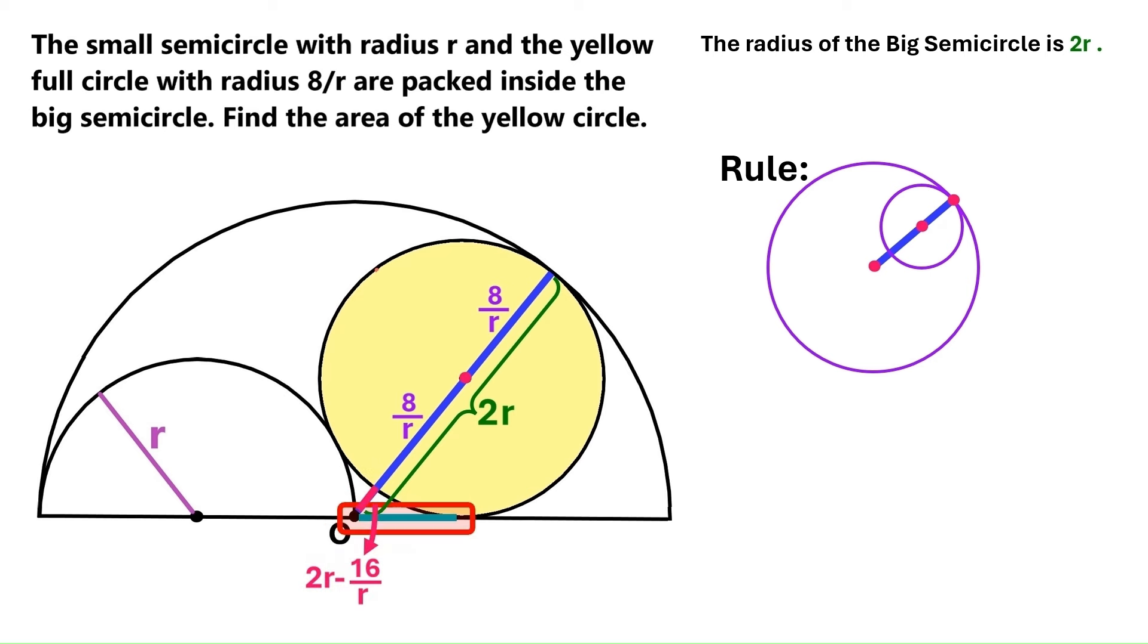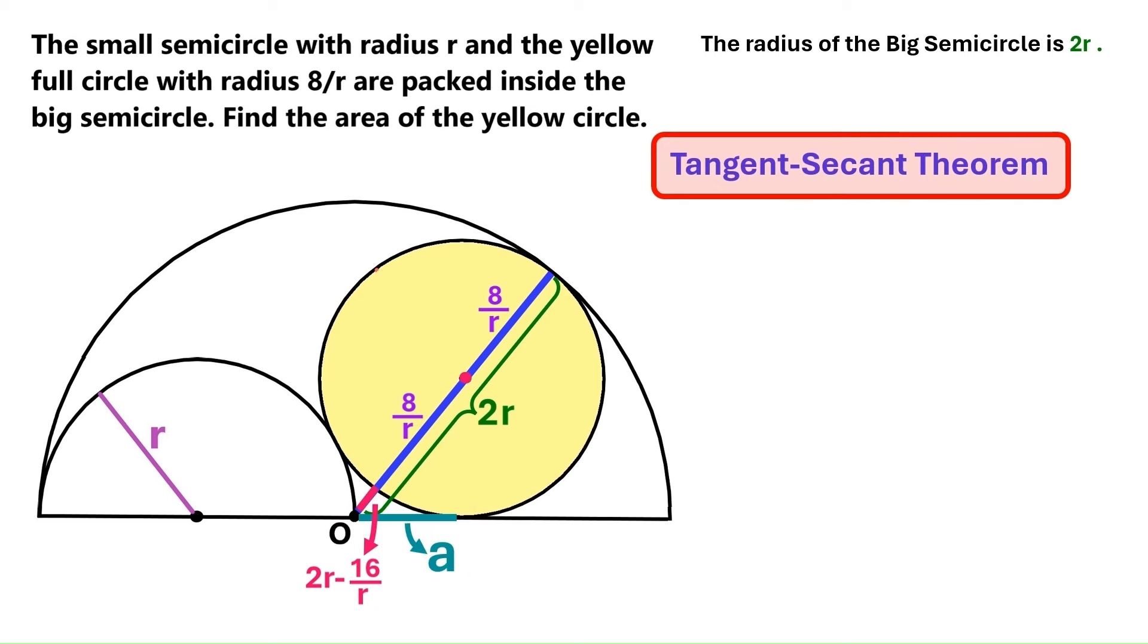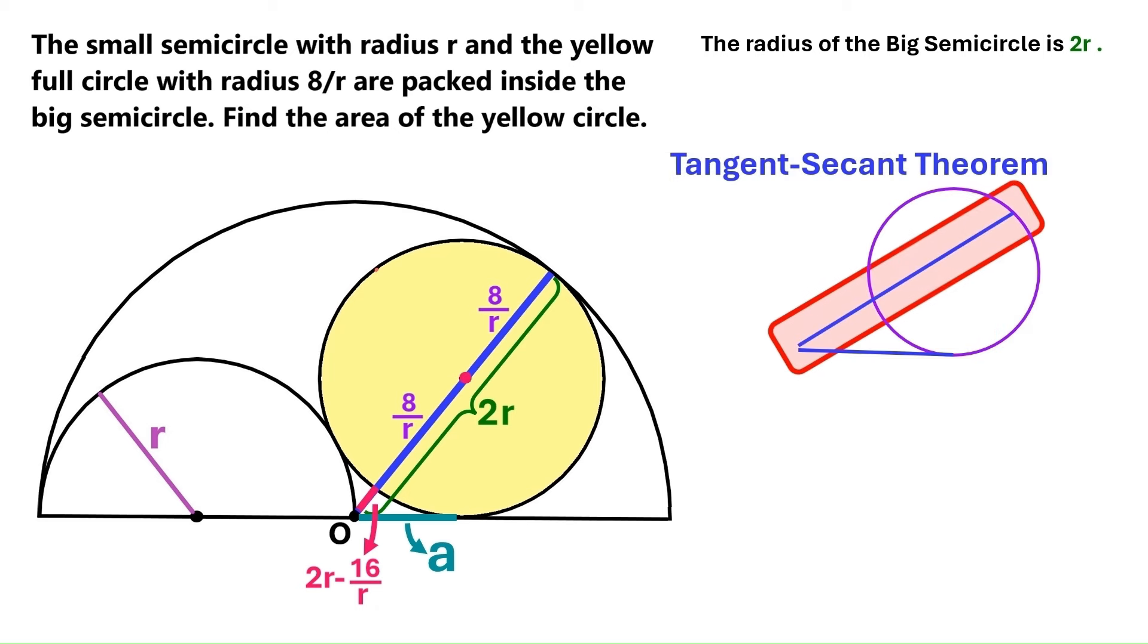Next, we'll draw this line down here, and we'll call it a. Now, I'm going to show you the very handy tangent-secant theorem, which states that if a circle has a tangent and a secant, and their point of origin is the same, then the distance x times distance y, which you see in the figure, equals the square of the distance z.